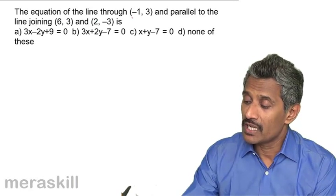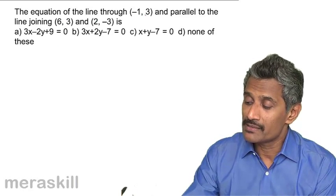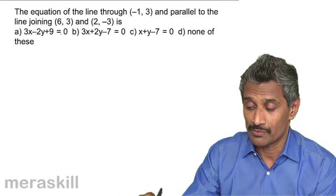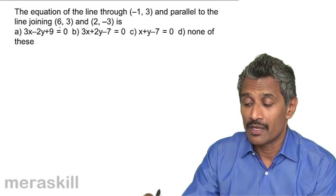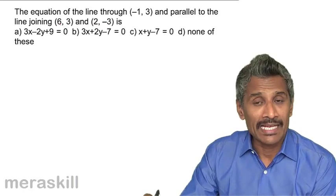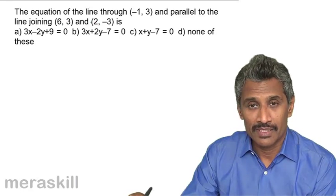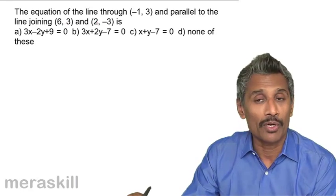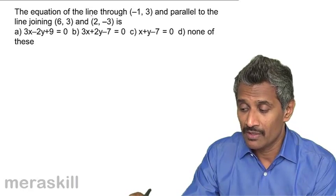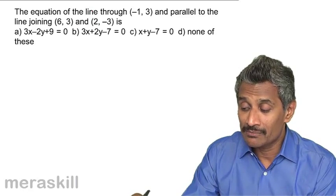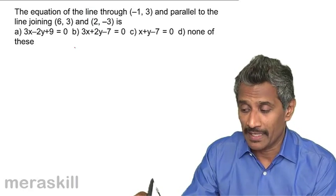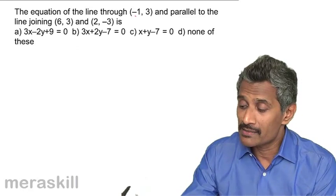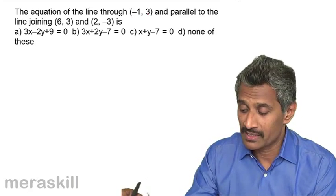The problem asks for the equation of the line through minus 1 comma 3, parallel to the line joining 6 comma 3 and 2 comma minus 3. So there is line number 1, for which two points are given, and line number 2, whose equation we need to find. Line number 2 has one known point.